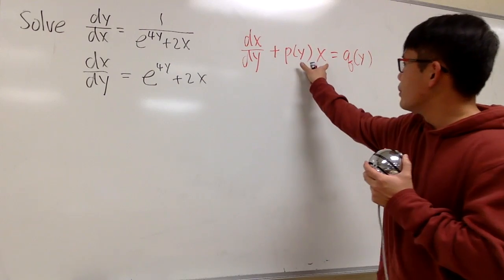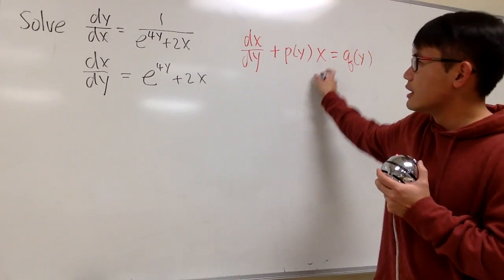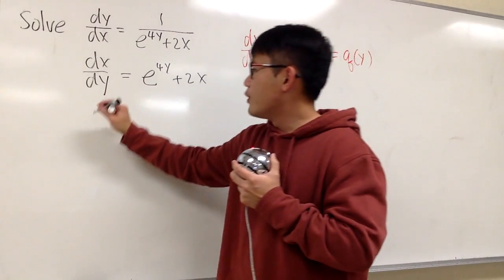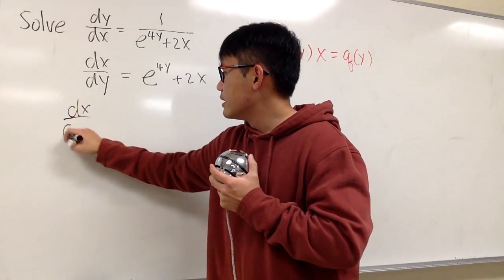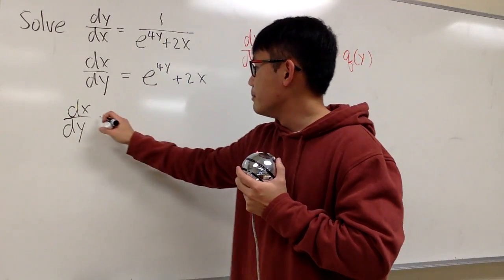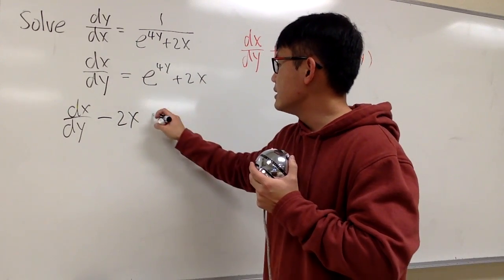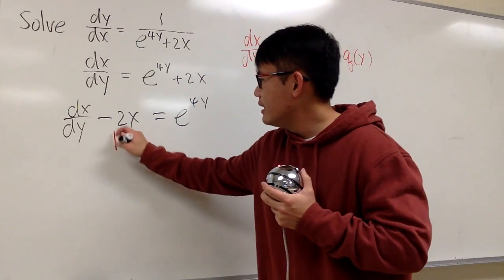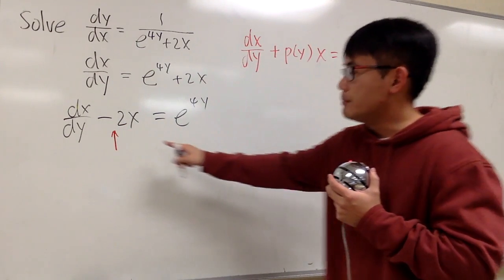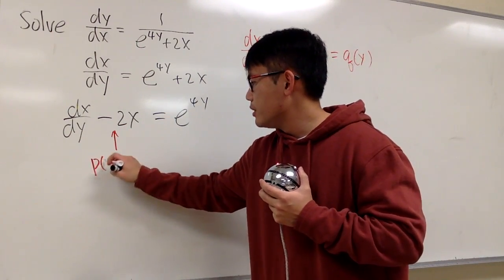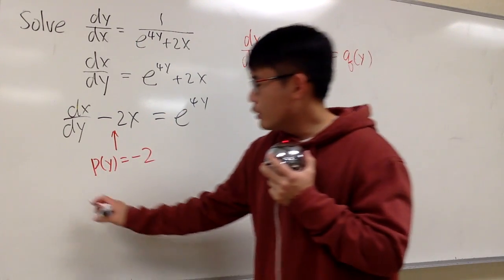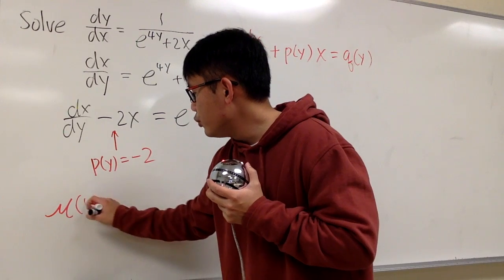All right, so right here, I would like to have p(y) times x. Well, it's this. I want to move this to the other side. Therefore, we will have dx/dy, and this will be minus 2x, and this is equal to e^(4y). And now, look at this carefully. This is the p(y). p(y), in this case, is negative 2. And in our integrating factor,